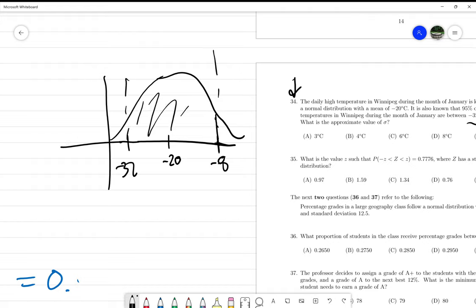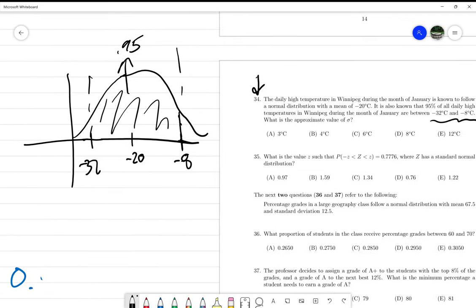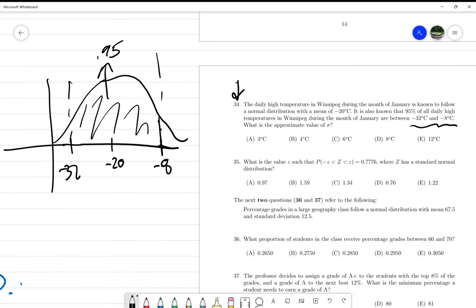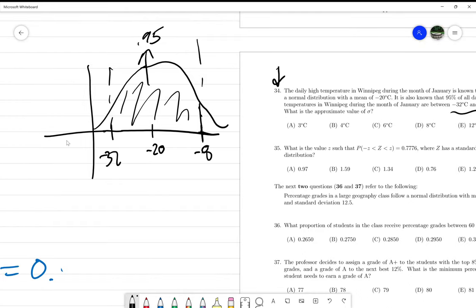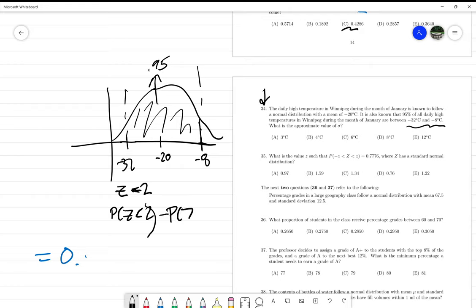We are given that this area is 0.95. Recall from the notes that whenever we have an area that covers 95% of the density curve between two points, that corresponds to a standardized z-value of 2. If you look at your tables, P(z < 2) minus P(z < -2) should give you 0.95.